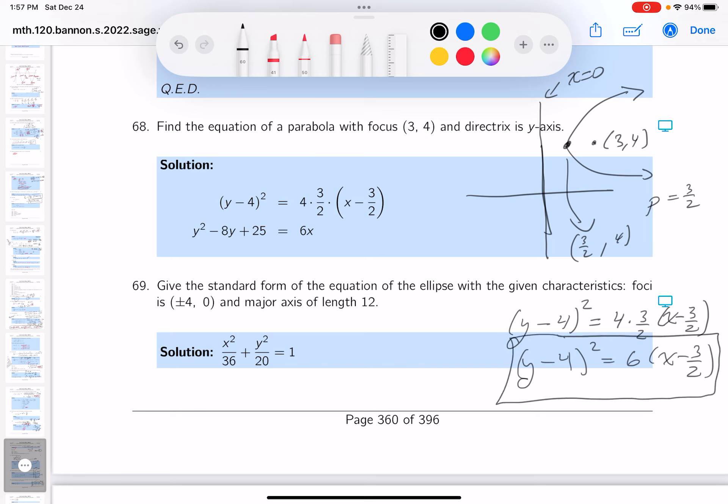I'm going to go a little bit further than that. It's going to be y squared minus 8y plus 16. 6x. And that's going to give you minus 9.